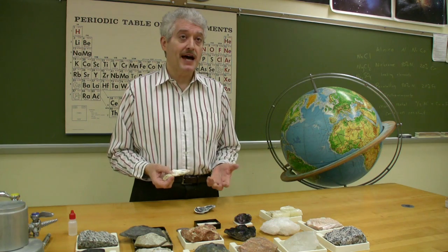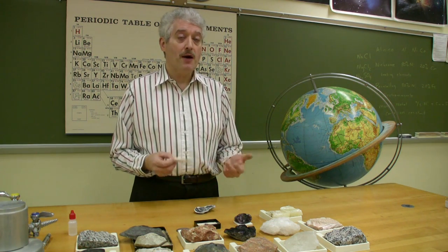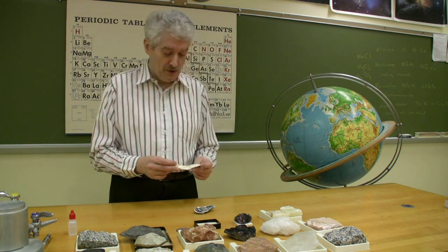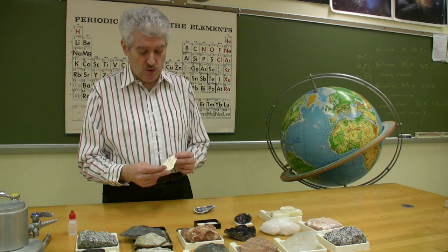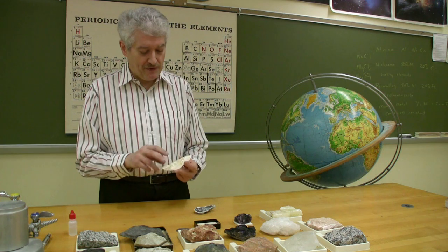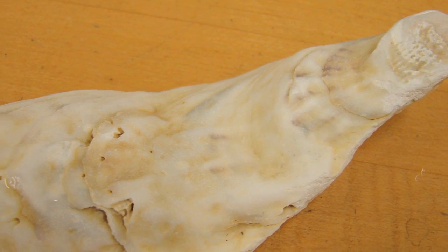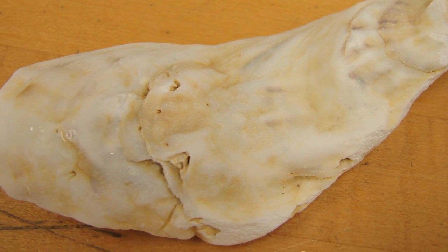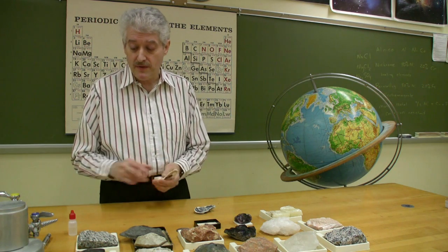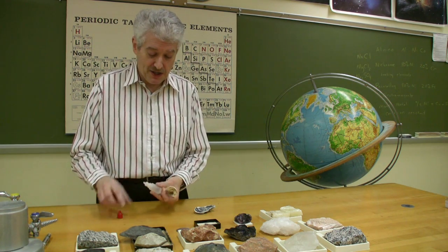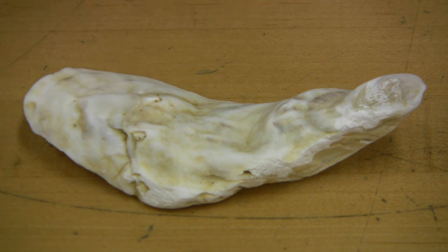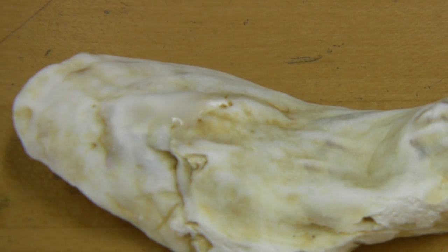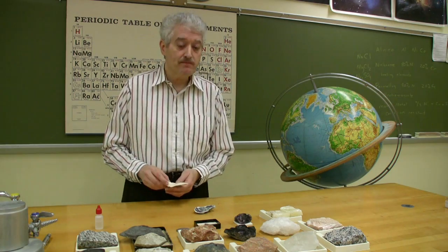One group that does that is the mollusks, and one example of a mollusk is the oyster. An oyster is a bivalve, a two-shell mollusk — here is one shell of it. And if we look at this shell, it's made of calcite, very similar to limestone. So if we put a little drop of dilute acid on here, about the strength of vinegar, we're going to get a very powerful reaction, which indicates that we have a material made of calcite.